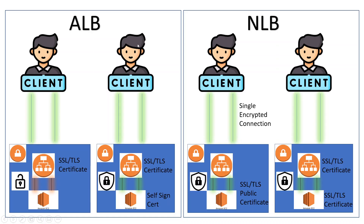Now let's look at the second scenario, where this is our client and there is an encrypted connection. We have an SSL TLS certificate already installed, and we again have an encrypted connection here — you see it as a green glow — because we have a self-signed certificate that is installed on our EC2. So both are now encrypted connections, which provides more security.